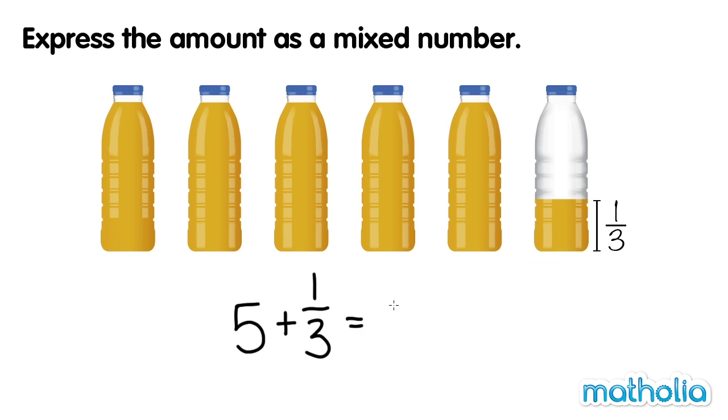Five plus a third equals five and a third. There are five and a third bottles of orange juice.